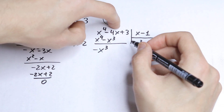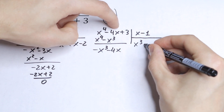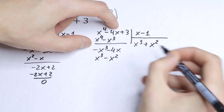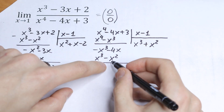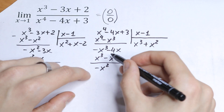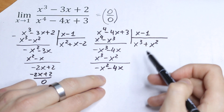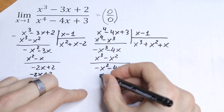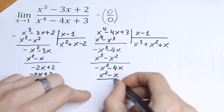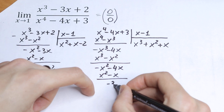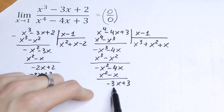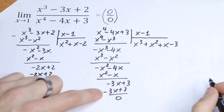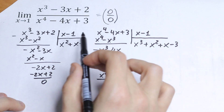We don't have an x-squared term, so we write minus x-cubed and minus 4x. Multiplying by x-squared gives x-cubed minus x-squared. Then multiplying by x gives x-squared minus x. The last step: minus 4x minus minus x gives minus 3x plus 3. Multiplying by minus 3 gives minus 3x plus 3, which is 0. So we've factored x minus 1 from both the numerator and denominator.